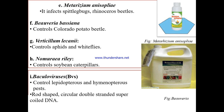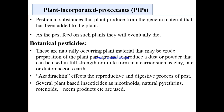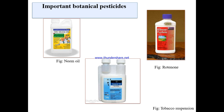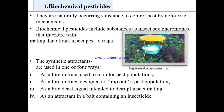Plant incorporated protectants (PIPs) are pesticide substances that plants produce through genetic engineering. Botanical pesticides can be prepared by grinding all plant parts to produce a dust or powder. Azadirachtin affects the reproductive and digestive processes of certain pests, and it is a compound found in the neem plant — neem oil. Rotenone is another example.